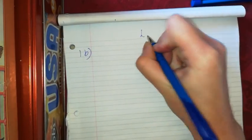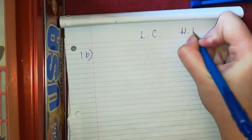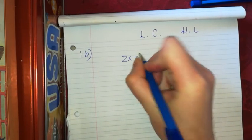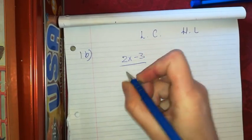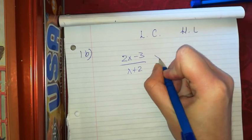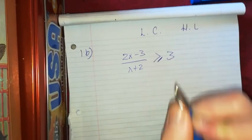This is question 1 part b, the Leaving Cert higher level. It says: solve the inequality (2x minus 3) over (x plus 2) is greater than or equal to 3.